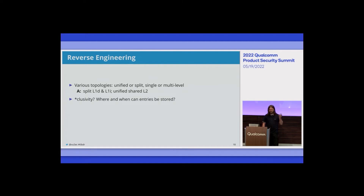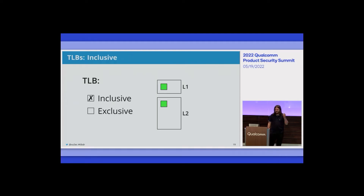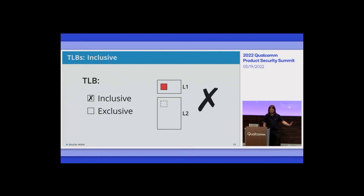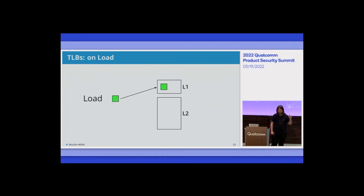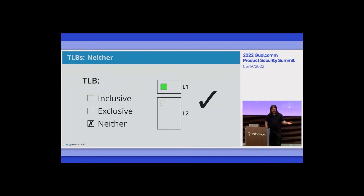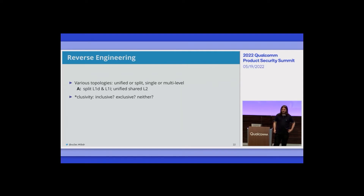Second, we have to think about inclusivity — where entries can be in a hierarchical cache. An inclusive cache requires that entries in higher (lower-numbered) levels must also be in lower levels: an entry in L1 always needs to be in L2 as well. An exclusive cache means an entry may be present in at most one level — never in both. There's also a third option, 'neither,' meaning entries can be anywhere — in L1, in L2, or both.